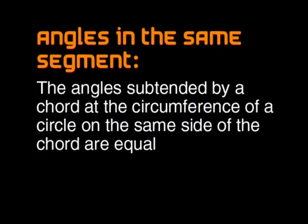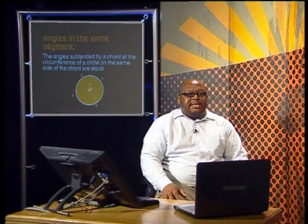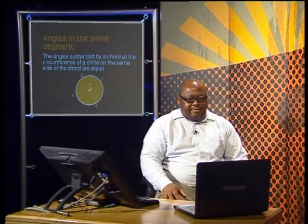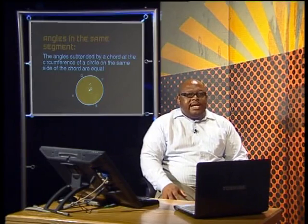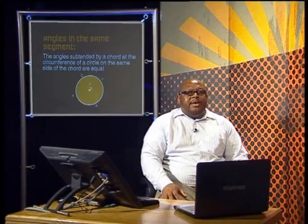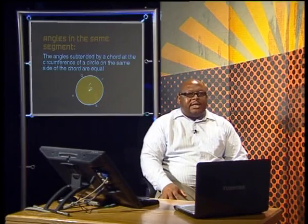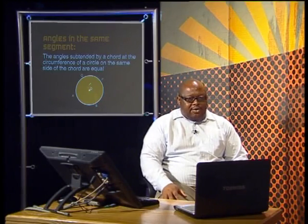This is what the theorem statement says: the angles subtended by a chord at the circumference of a circle on the same side of the chord are equal. We can call this the angles in the same segment theorem. We need a circle and a chord, then we need to create at least two angles on the circumference that are on the same side of the chord.